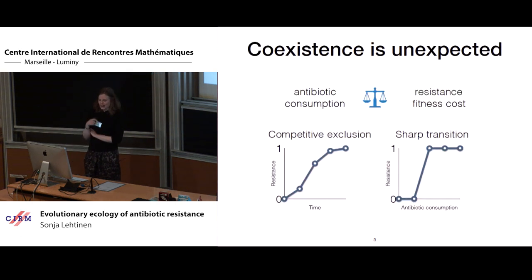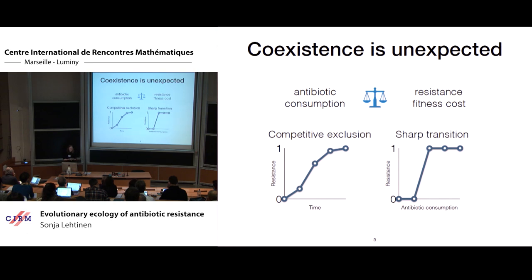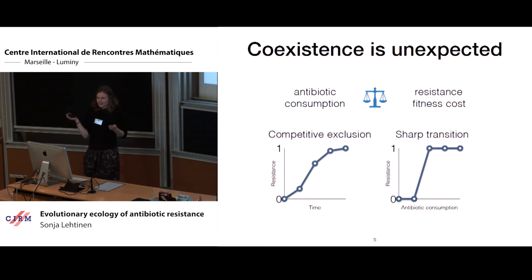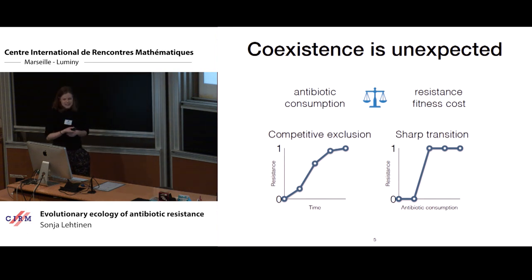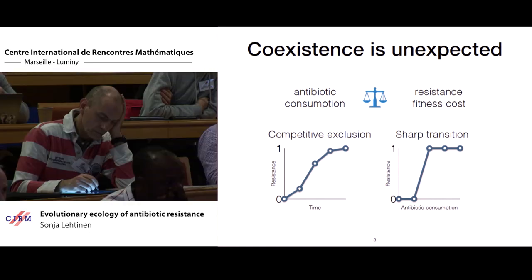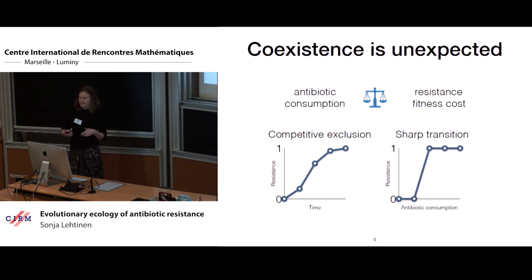On to the first part: coexistence. Antibiotic resistant and antibiotic sensitive strains are in competition for the same hosts, so intuitively we wouldn't expect them to coexist — we'd expect the fittest strain to outcompete the other. On one hand, antibiotic exposure makes it advantageous to be resistant. But on the other hand, resistance is assumed to carry a fitness cost, which makes it advantageous to be sensitive. So depending on the balance of these two factors, we would expect one strain to outcompete the other. If resistance is advantageous enough to be seen at all, we would eventually expect resistance frequencies to rise to fixation — to 100%. Similarly, in the relationship between antibiotic consumption and resistance, we would expect threshold-like behaviour, where below some antibiotic consumption we see no resistance, and above some rate we see everything resistant.